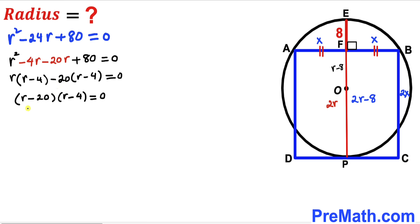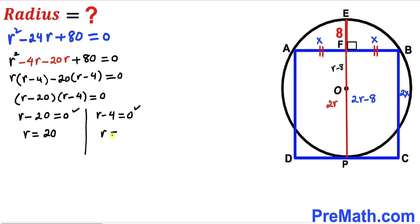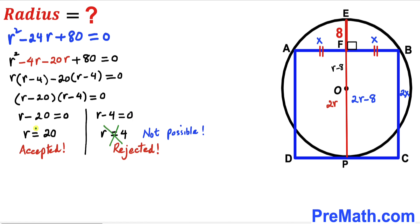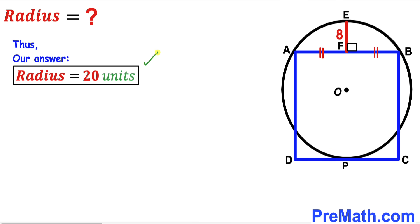Setting each factor to zero gives r = 20 or r = 4. Since r = 4 is not feasible for this configuration, we reject it. Therefore, the radius r equals 20 units. That's our final answer. Thanks for watching, and please don't forget to subscribe to my channel for more exciting videos!